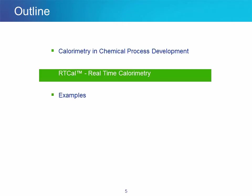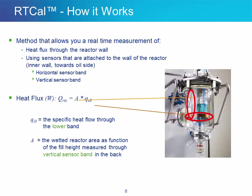The RT-Cal technology is based on the use of sensors attached to the reactor wall. There is a sensor wrapped horizontally at the bottom and another one vertical in the back. The horizontal one at the bottom detects the heat coming in and out of the vessel. The vertical sensor in the back helps determine automatically the heat exchange area between the reaction mixture and the vessel wall. There is a direct relationship between the reaction enthalpy and the heat detected by the lower band and the heat exchange area between the reaction mixture and the vessel wall.